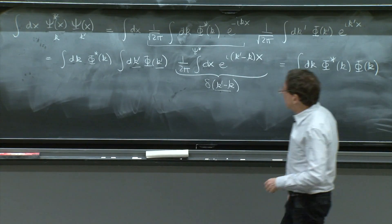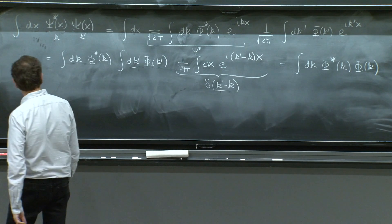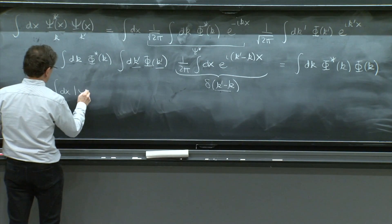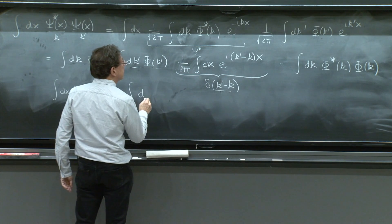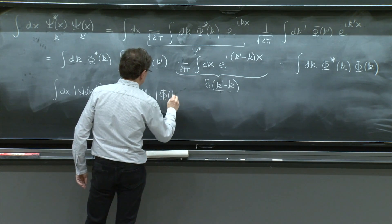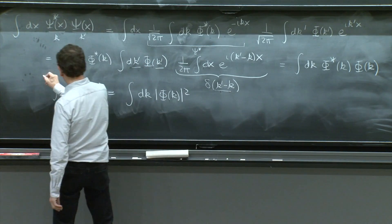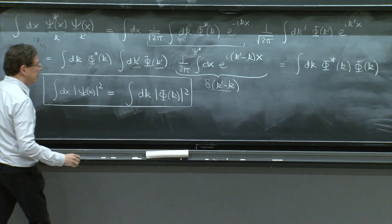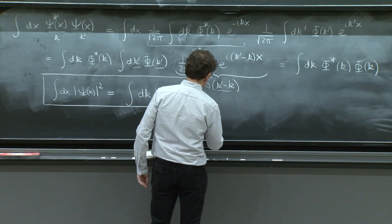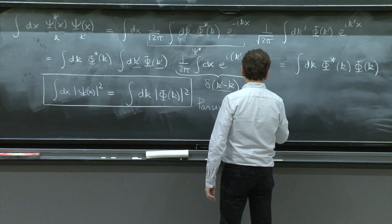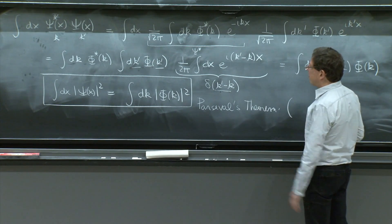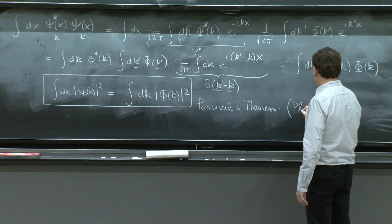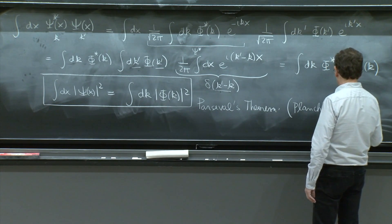We found what is called Parseval's theorem, which is that integral dx of psi of x squared is actually equal to integral dk phi of k squared. So it's called Parseval's theorem. Sometimes in the literature, it's also called Plancherel's theorem. I think it depends on the generality of the identity. So Plancherel's theorem.